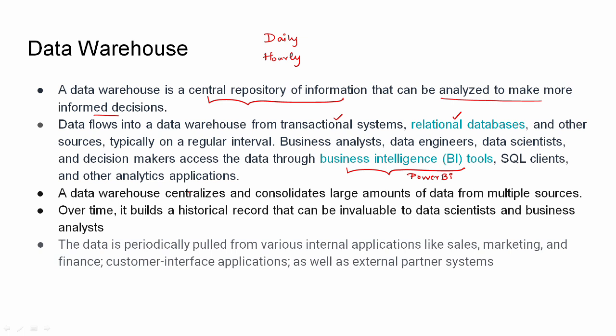The data warehouse consolidates large amounts of data from multiple sources. It stores data over time — one year, two years — for companies like Amazon or Google. You can browse historical records and store settings per user, which supports business decisions. In a company, there are many teams: sales team, marketing team, finance team, customer interface team — each with their own data stored in different applications.